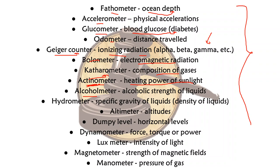Alcoholmeter measures the alcoholic strength of liquids. Hydrometer measures the specific gravity — basically the density — of liquids. Altimeter measures altitudes of mountains or basically anything tall.